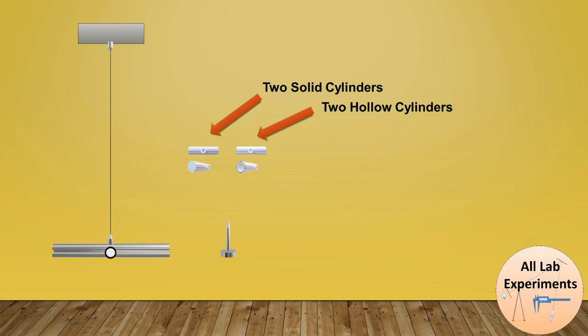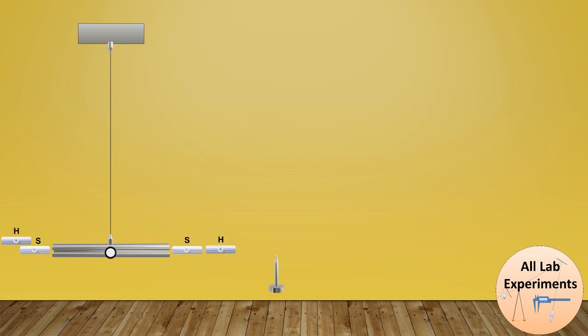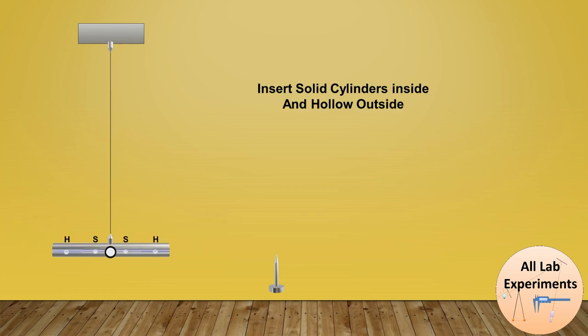and two identical hollow cylinders. In the first step, we are going to insert solid and hollow cylinders in the Maxwell needle. We place them such that solid cylinders are inside and hollow cylinders are towards the outside of the Maxwell needle. This is our first arrangement.